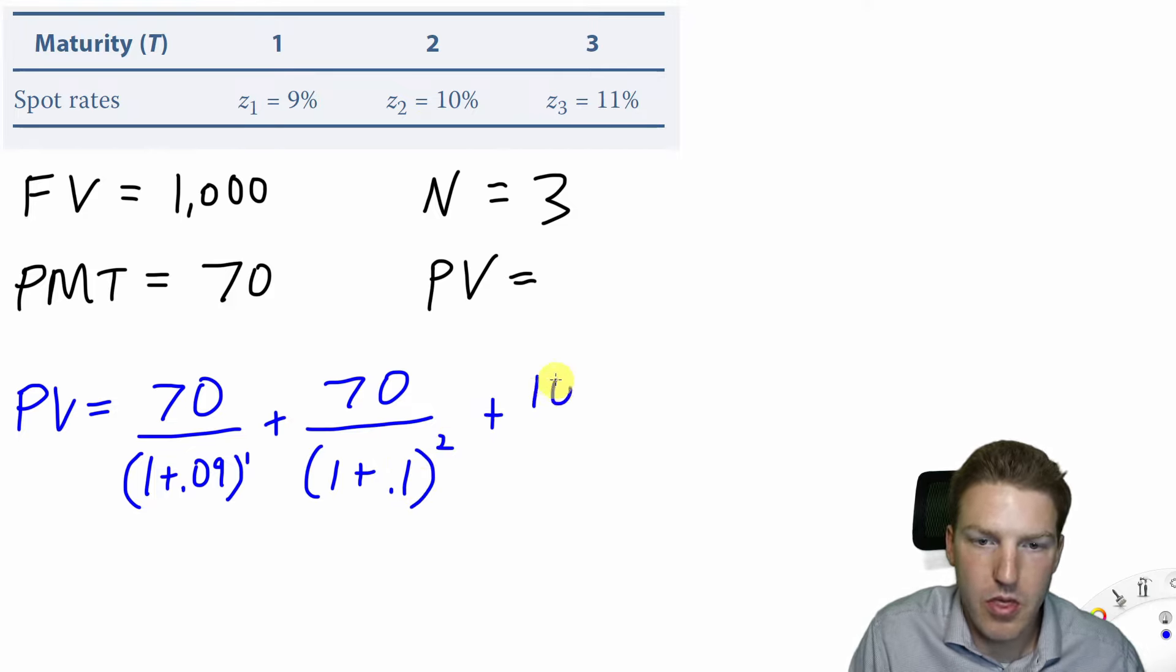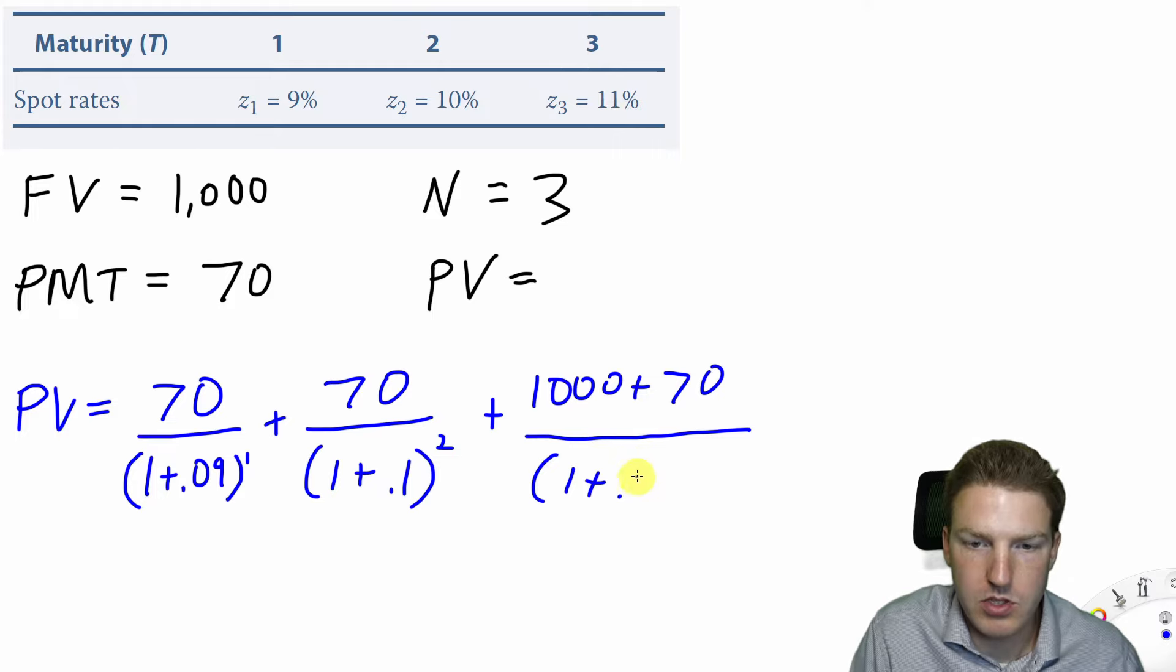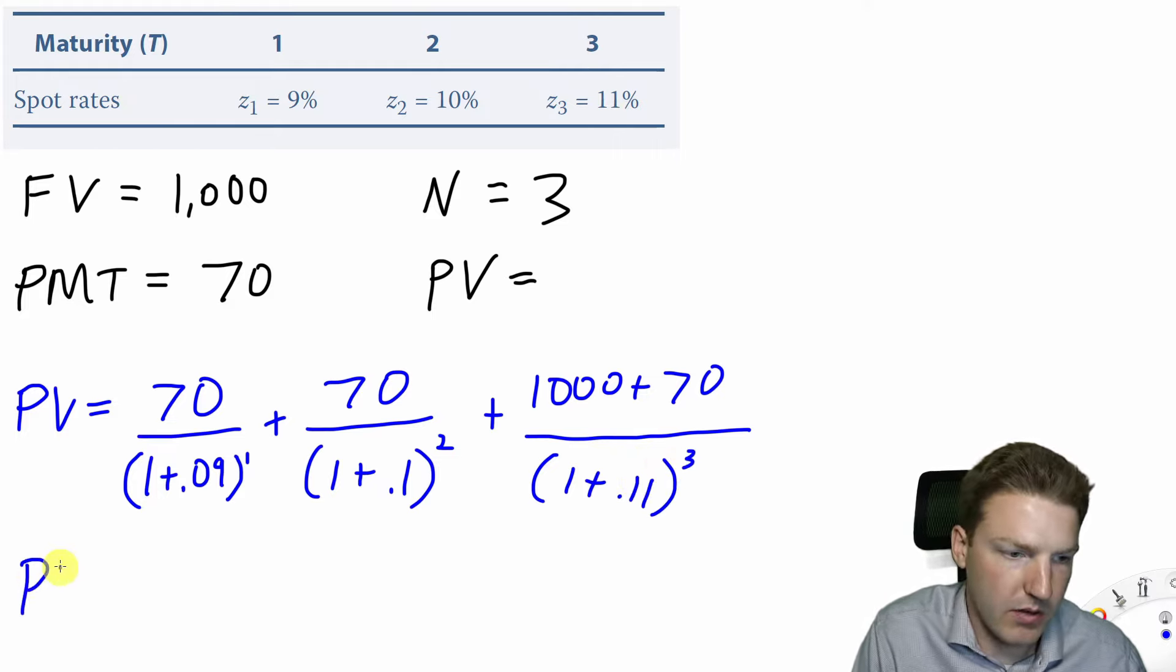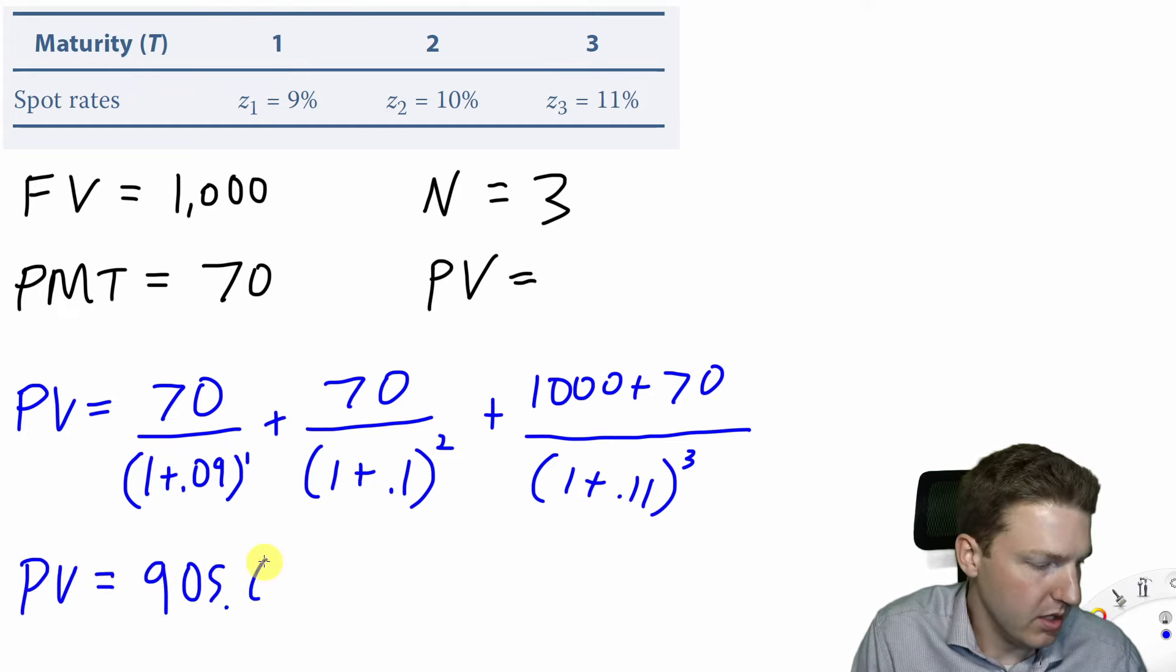plus $1,000 plus $70, which is the final notional payout and the payment for the final year, divided by 1 plus the three-year spot rate of 11%, compounded three times. Solving for this will give us a present value equal to $905.65.